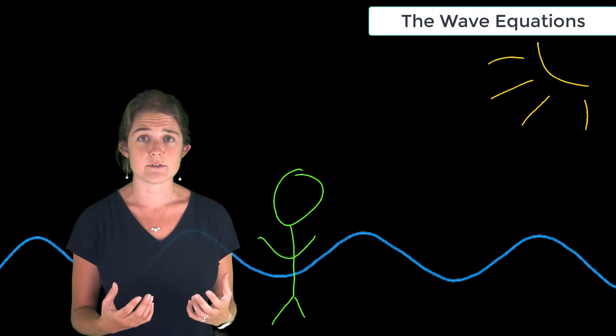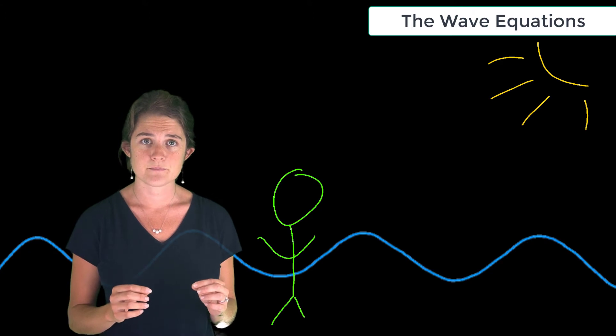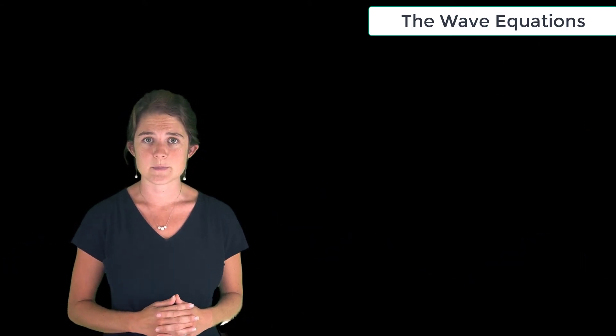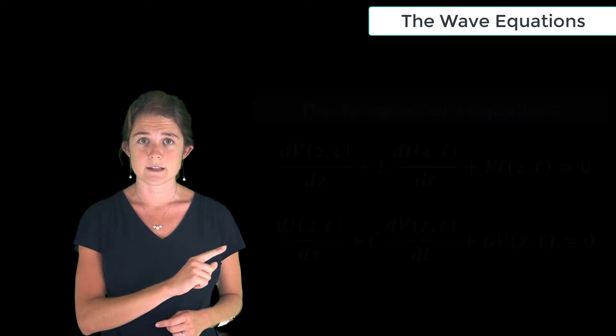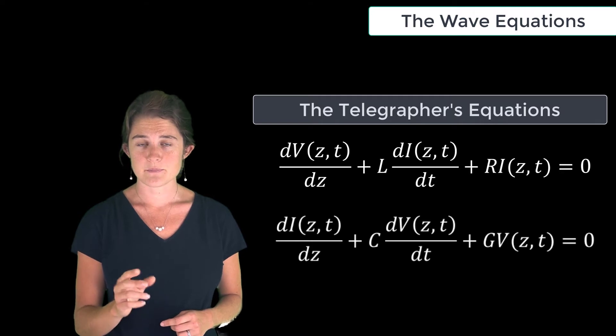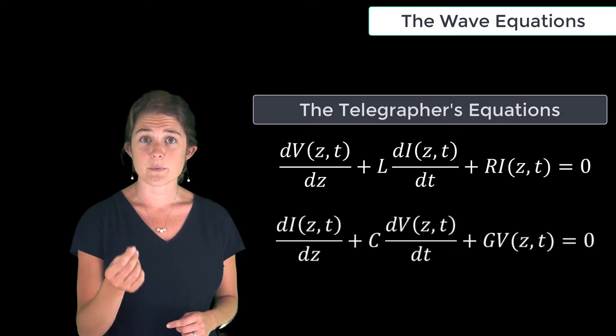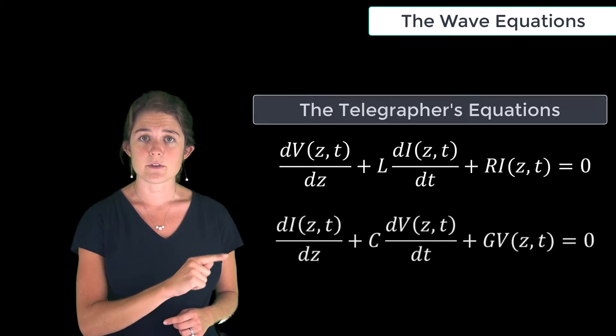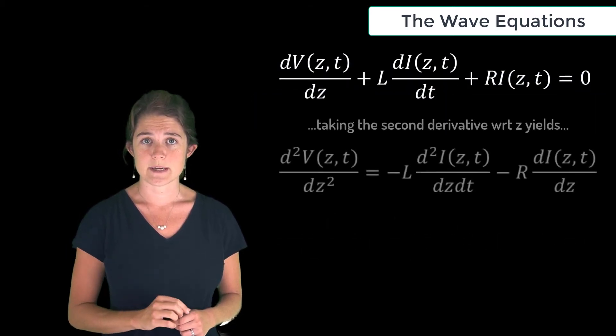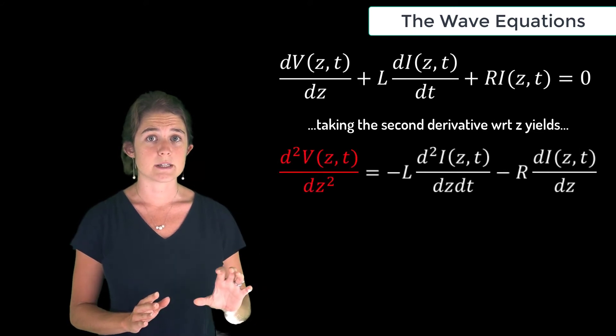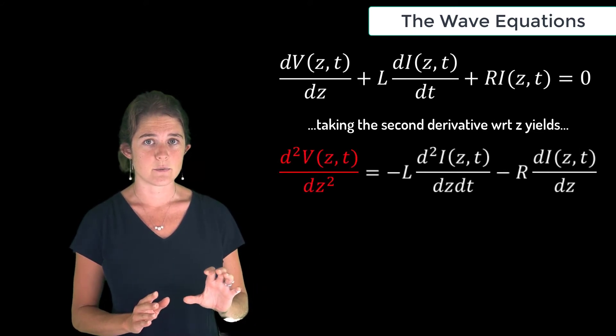To derive the wave equations for voltage and current along a transmission line, we start with the telegraphers equations. These equations only have first derivative terms, and we know that for the wave equations we want second derivatives. So let's start by taking the derivative of the first equation with respect to space. Now we have a second derivative of voltage with respect to space on the left hand side of the equation, which is what we want for the voltage wave equation.